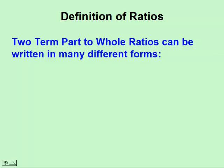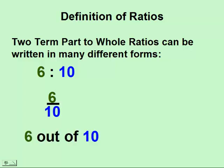Two-term part-to-whole ratios can be written in many different forms. They can be written with a colon, six to ten. They can be written as a fraction, six over ten. Or you can even write them with words, six out of ten, or quite often they put the word two, t-o, in between as well.